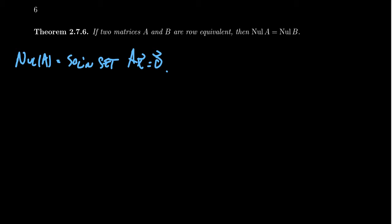And as a consequence, if row equivalency doesn't change the solution set to a linear system of equations, and the null space is a solution set to the homogeneous system, that means if A and B are row equivalent, then the two matrices will have the same null space. The null space of A equals the null space of B. This is particularly useful if B is the RREF of the original matrix A.